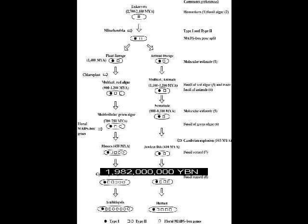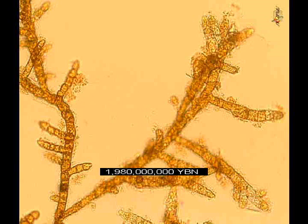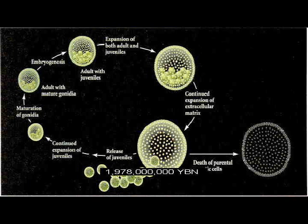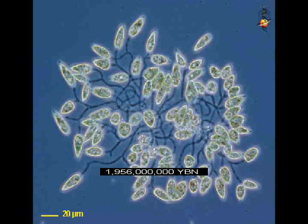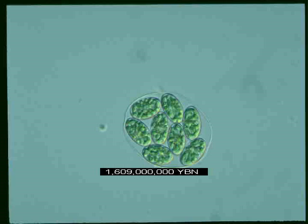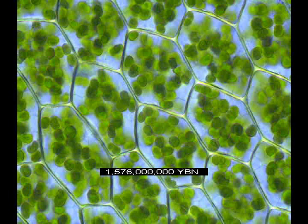Homeobox genes regulate the building of major body parts. Multicellular eukaryotes. Differentiation in multicellular eukaryotes — gamete-producing and somatic cells. Colonialism evolves in eukaryotes. End of banded iron formation. First plant: cyanobacteria becomes plastids in a eukaryotic cell.